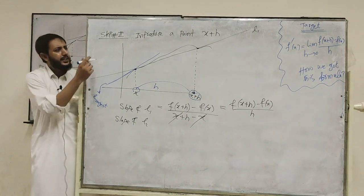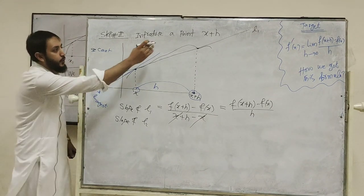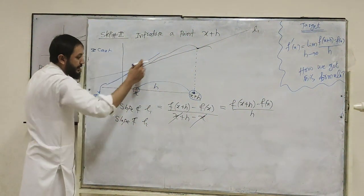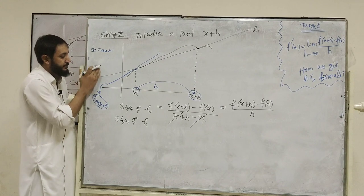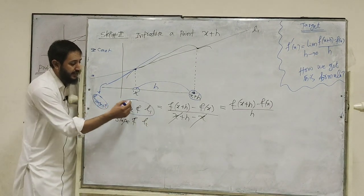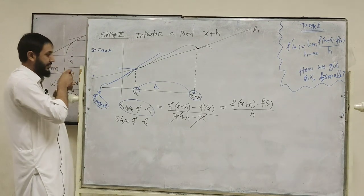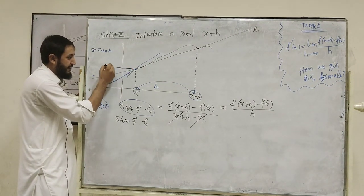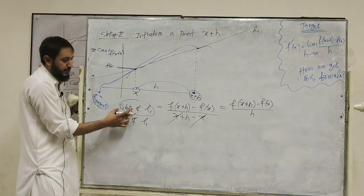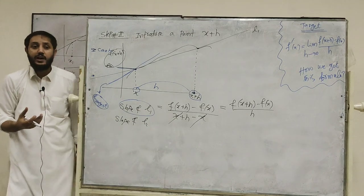What is a secant line? A line which intersects a curve at two or more points. So this is l1. Now, from elementary classes, what is the formula for the slope of this secant line? Output difference divided by input difference. The output at x is f of x, and the output at x plus h is f of x plus h. So slope of l1 equals f of x plus h minus f of x, divided by h.